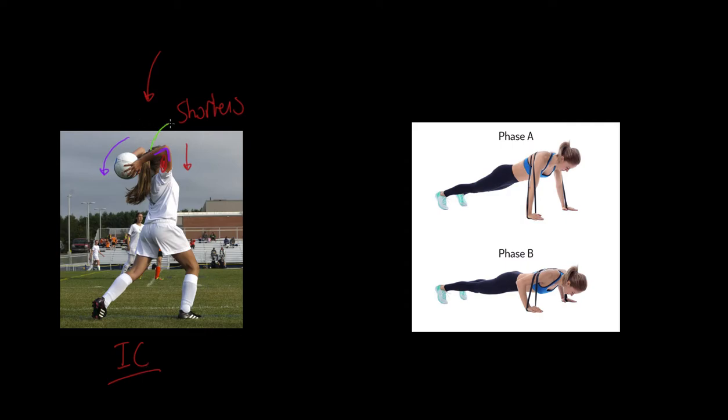As this arm now at the elbow starts to extend, the tricep is now going to shorten and cause this extension of the elbow. This is an isotonic concentric contraction because we've got shortening of the prime mover, the agonist muscle. In phase one, we've got an isotonic concentric contraction of the bicep brachii, and in phase two, the elbow extension, we've got an isotonic concentric contraction of the tricep brachii. The antagonistic pair is relaxing, doing none of those contractions we looked at before.